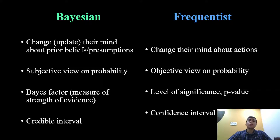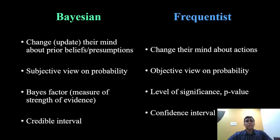Frequentist analysts usually do not care about forming an opinion about the results prior to analysis, but are more interested in the actual outcome — the absolute value, the truth which exists in the data. So after discussing this, when is it a good time to use Bayesian analysis and when is it a good time to use frequentist analysis?